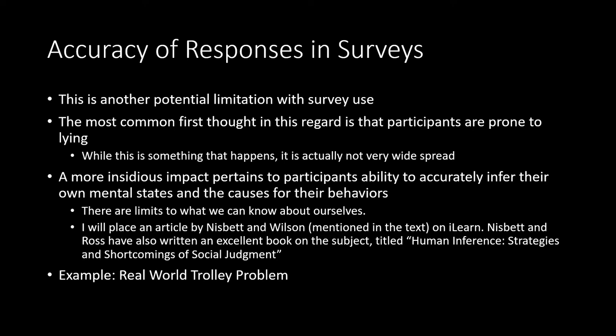There are ultimately limits to what we can know about ourselves. I will place an article by Nisbett and Wilson, mentioned in the text, on iLearn so you can look through it — it is about the limits of what we can know. Nisbett and Ross have also written an excellent book on the subject titled Human Inference: Strategies and Shortcomings of Social Judgment. For those who want to embark on a somewhat dense but invaluable read about understanding ourselves and other people, it is definitely worth it, and one can find old used copies for relatively cheap.